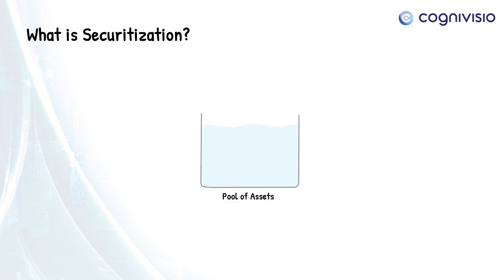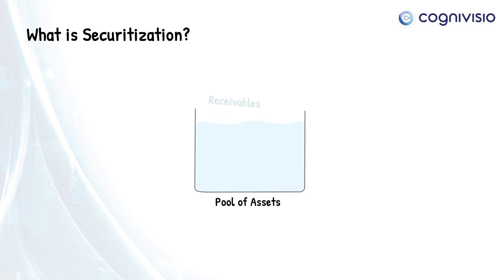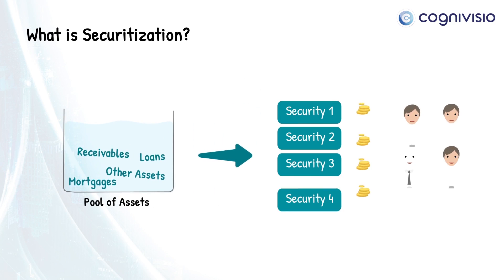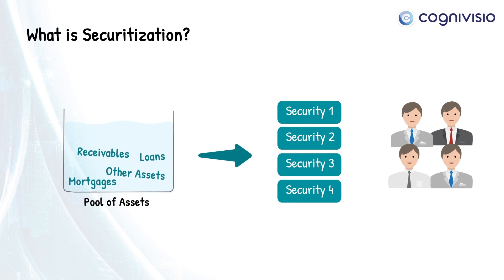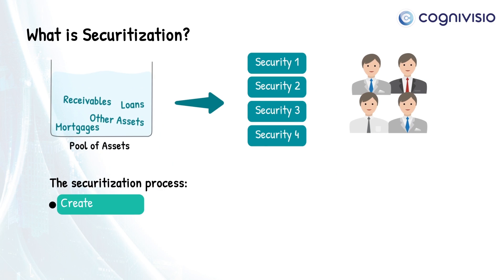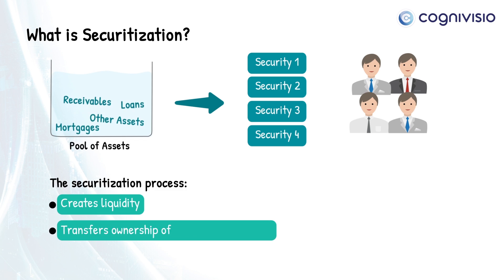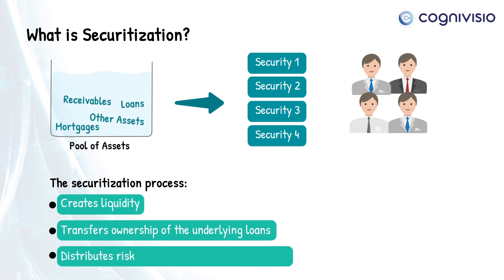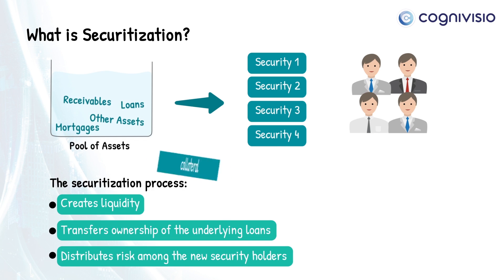Securitization is the process of turning a pool of assets like receivables or loans into tradable securities that are then sold to investors. The process creates liquidity for the instruments and transfers ownership of the underlying loans and distributes risk among the new security holders. This newly devised instrument is backed up by the underlying assets, which serve as collateral.